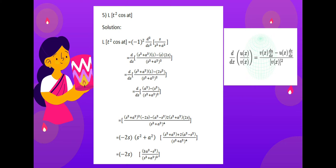For the Laplace transform of t²·cos(at): this equals (-1)² times d²/ds² of s/(s² + a²). We differentiate s/(s² + a²) one time first, applying the quotient rule to get (a² - s²)/(s² + a²)², and then differentiate once more.